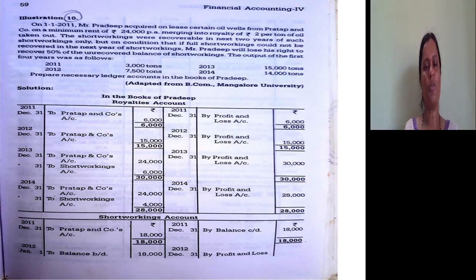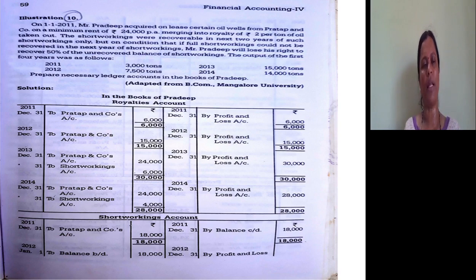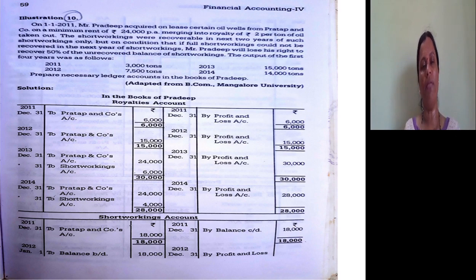This problem says that on 1-1-2011, Mr. Pradip acquired on lease certain oil wells from Pratap and Company. So Pradip will become lessee, and Pratap will become lessor because Pratap is the owner of the oil well. The minimum rent is ₹25,000 per annum, merging into royalty of ₹2 per ton of oil taken out.